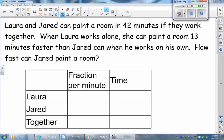Now it says that the time they work together is 42 minutes, so we're going to put 42 in the time for them working together. Then it says that when Laura works alone, she can paint a room 13 minutes faster than Jared.